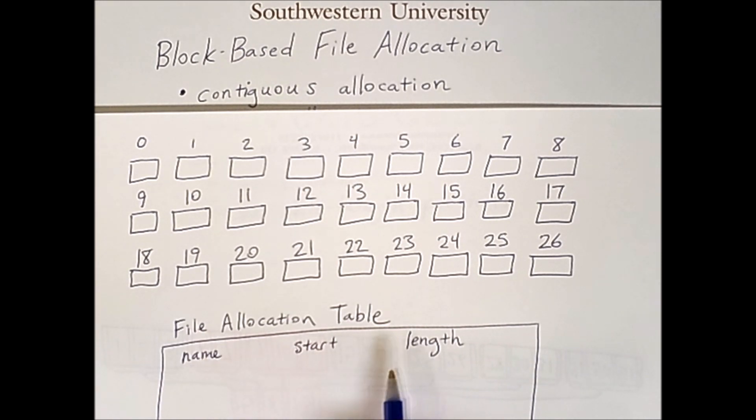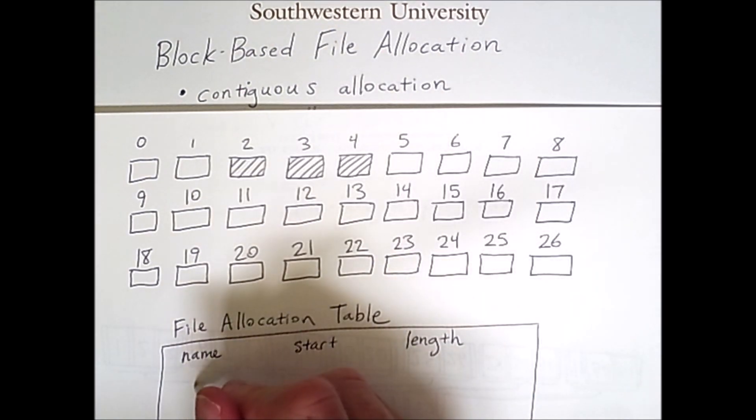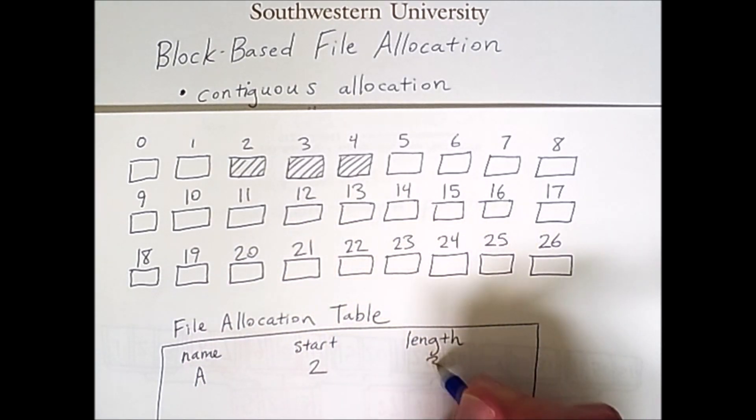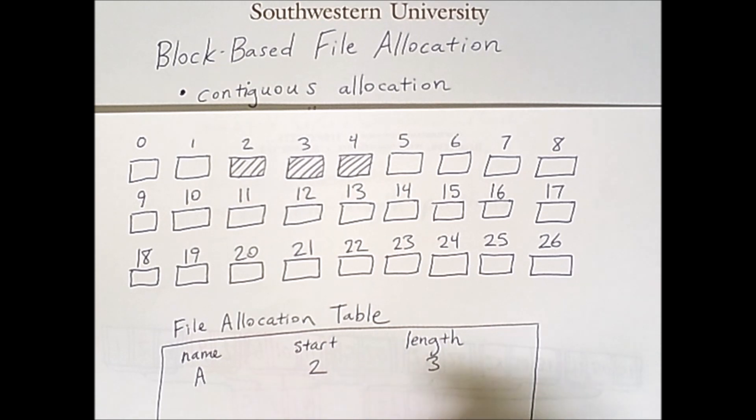I also have a file allocation table which will store information about where the files are located on disk. Now technically the file allocation table is also stored on disk, though we will not worry about this in this example. So let's say we have a file that starts at block 2 and has a length of 3. We'll call this file A and it starts at 2 and has a length of 3. And this is the information required in the table to identify that file on disk.